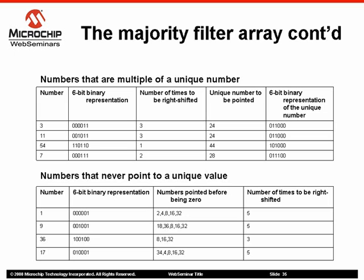Those numbers that never point to a 16 unique number are then pointed to their multiple and then they are trapped into a loop in such a way that the filter is waiting for a new value which points to a unique number.